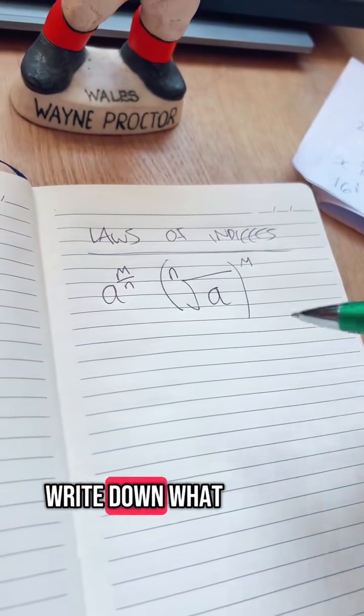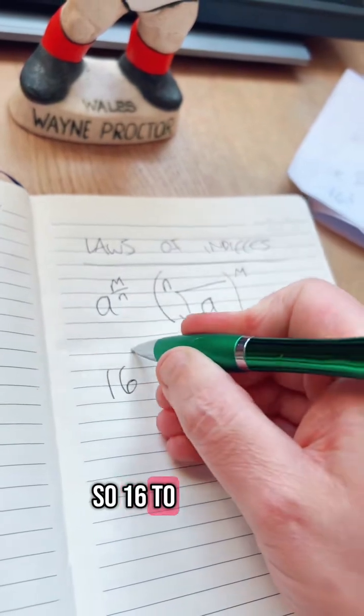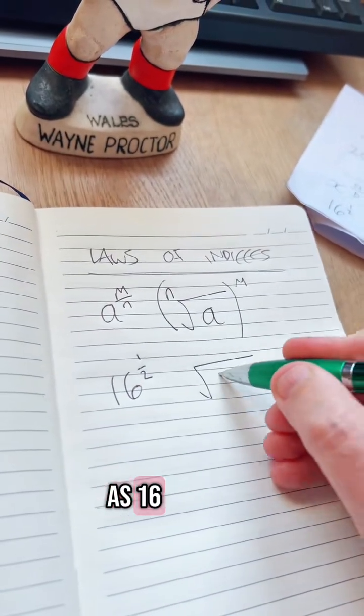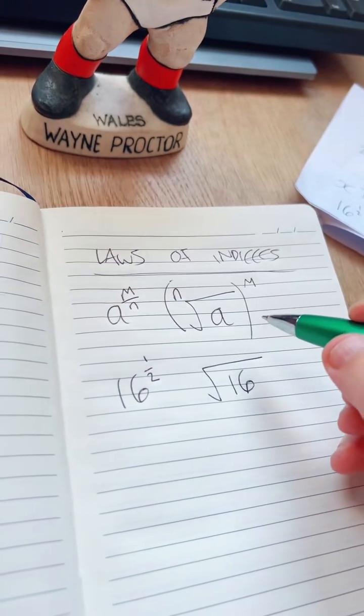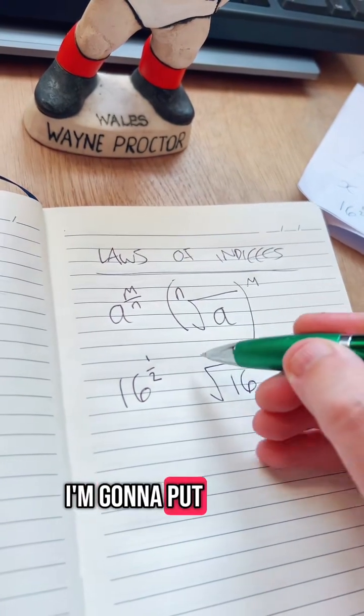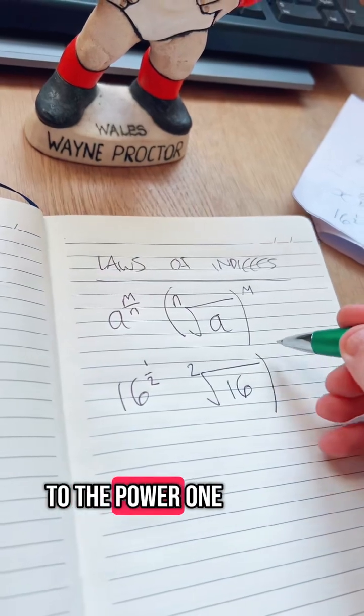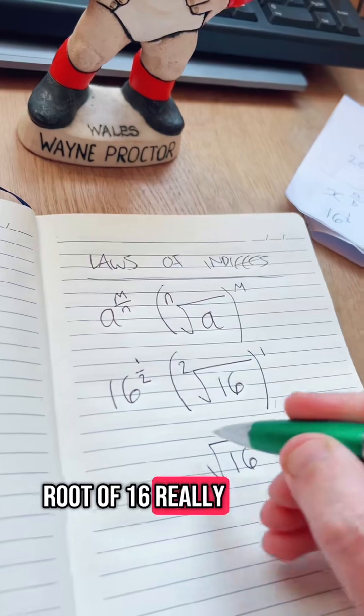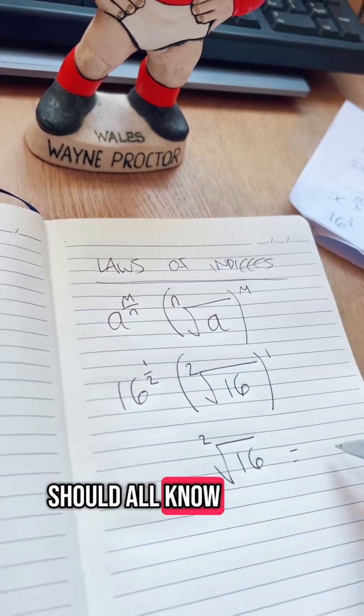So I'm going to write down one that we should all know. 16 to the power half is the same as 16 under a square root. I'm going to put 2 there, which means square root, and all to the power 1, which is the same as square root of 16, which you should all know is 4.